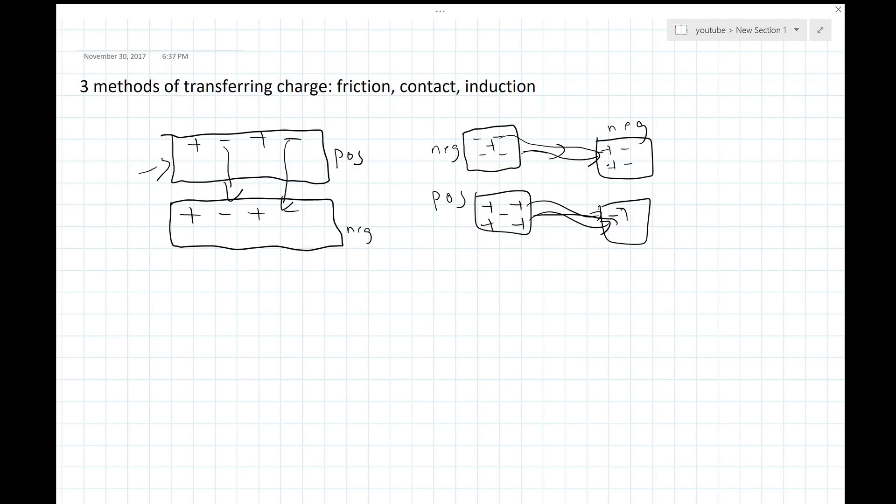So the third method of charging is charging by induction. Charging by induction is when you have a charged object, let's say it's negative, and a neutral object. And what happens is the charged object doesn't touch it, it goes near it - so it doesn't touch the neutral object, it goes somewhat near it,